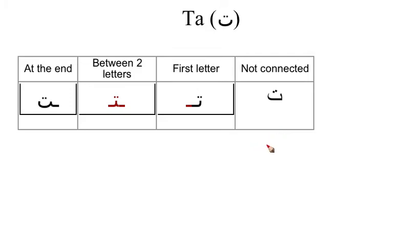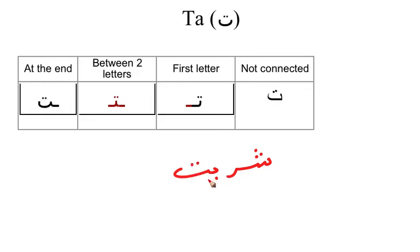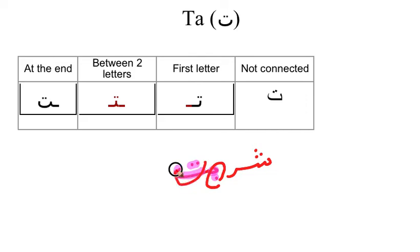Let us write another word: Shaript. SHA is the letter with three edges and three dots. Then RA, then BIT. This is the letter BA and this is the letter TA. In this word we have two letters we already learned — the BA at the beginning and the TA coming at the end. Very simple and easy.